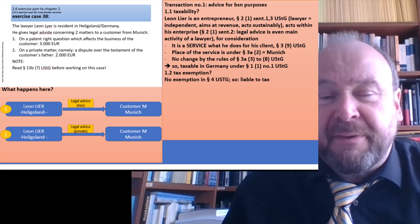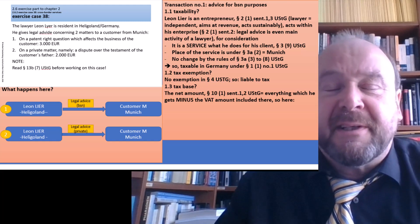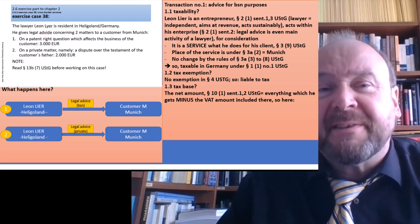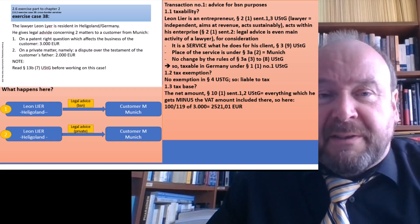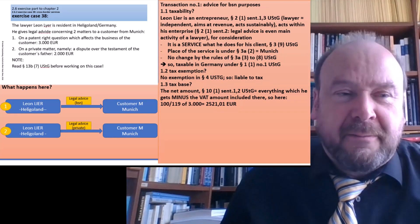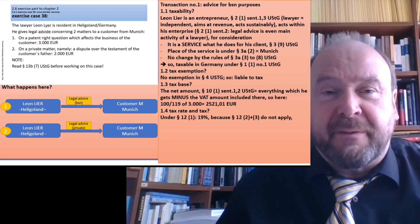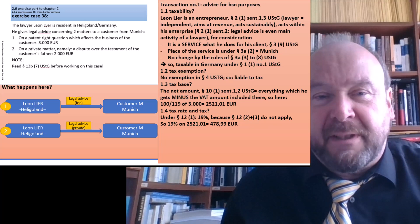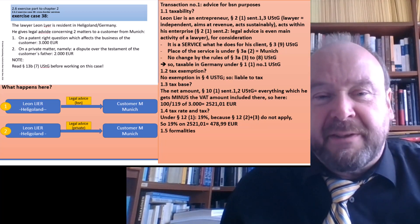Is there a tax exemption? Nothing in §4 comes to mind, so the service is liable to tax. The tax base is 3,000 euro charged, minus the VAT amount included — calculated as 100/119 × 3,000 = 2,521.01 euro. The tax rate is 19% under §12(1), because legal advice has no reduced rate and no zero rate. So 19% on 2,521.01 euro equals 478.99 euro in VAT.